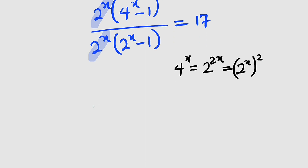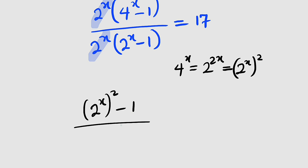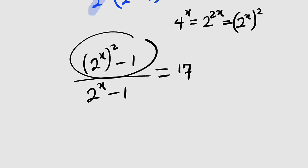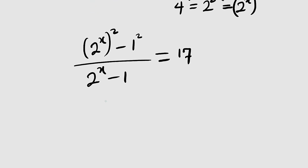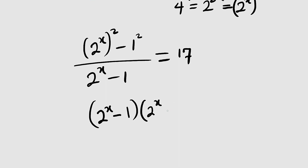So we have 2 to the power of x, all squared, minus 1, divided by 2 to the power of x minus 1, and this is equal to 17. This is a difference of two squares because 1 can be expressed as 1 squared. So if you want to factorize it, you take the first term, which is 2^x, then subtract 1.